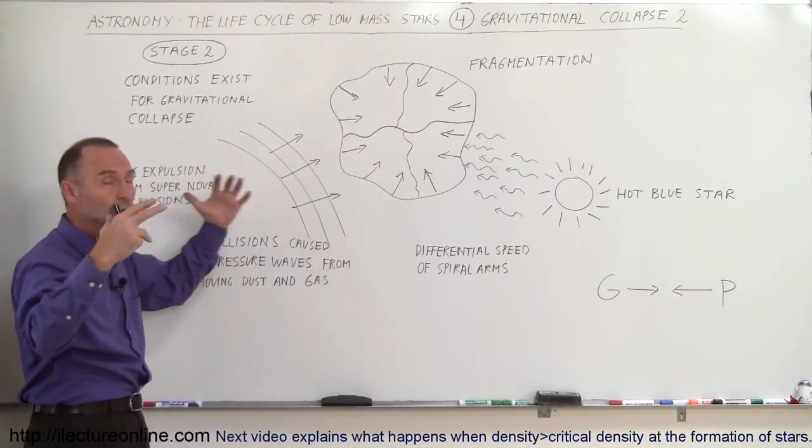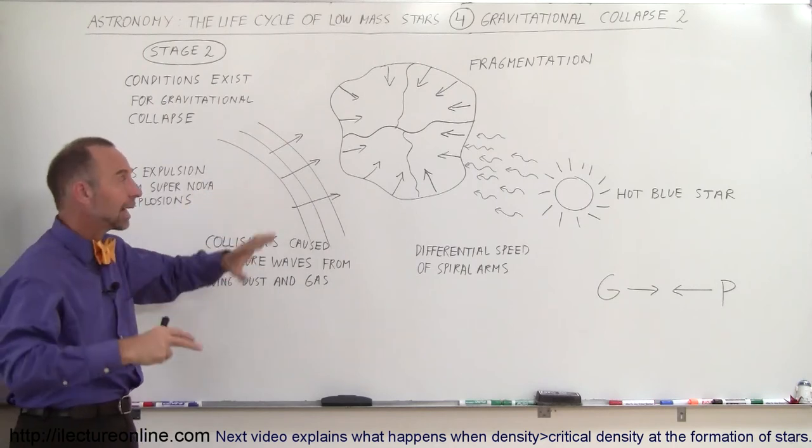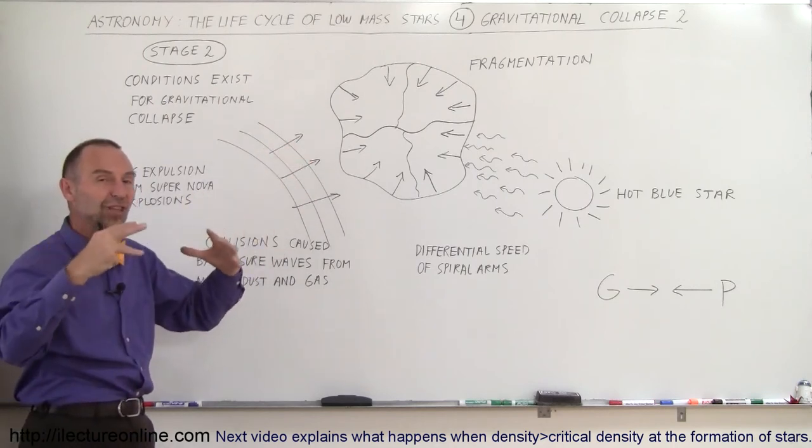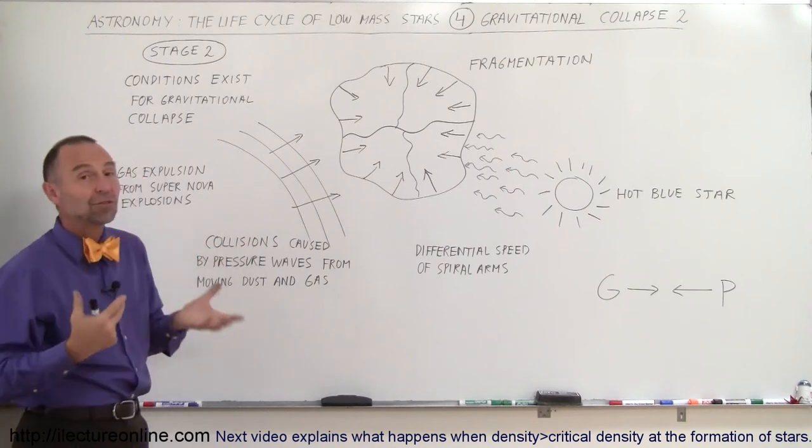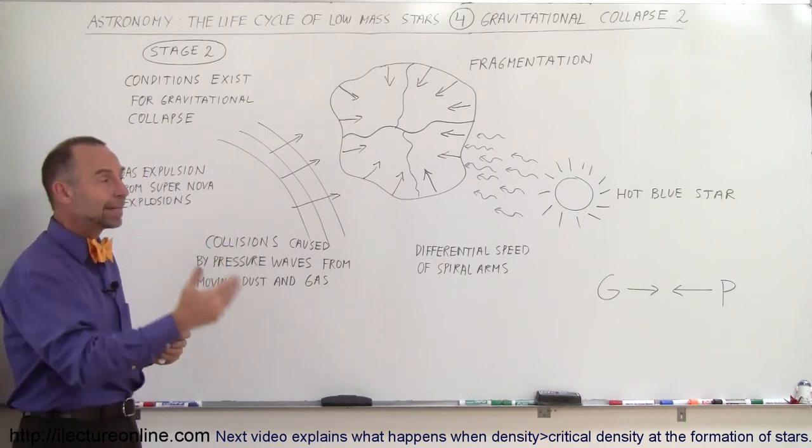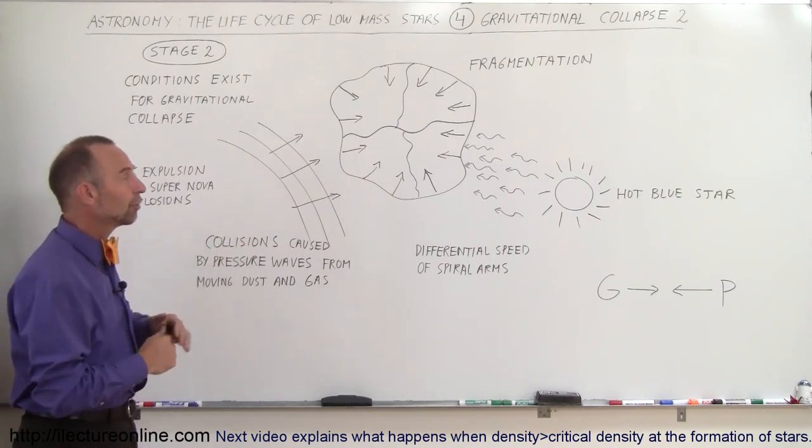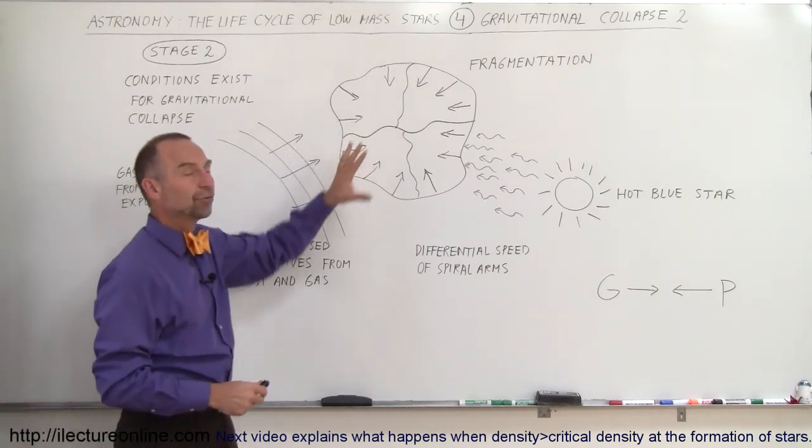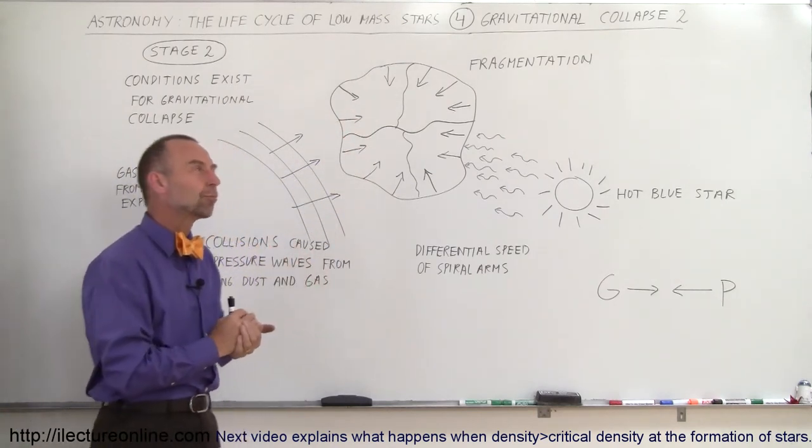There must be cases where large chunks of dust and gas continue to collapse, don't fragment, and form a single huge star. But in many cases, as we've seen in our universe with so many binary star systems, more than one star will be formed in the same region through this fragmentation process.